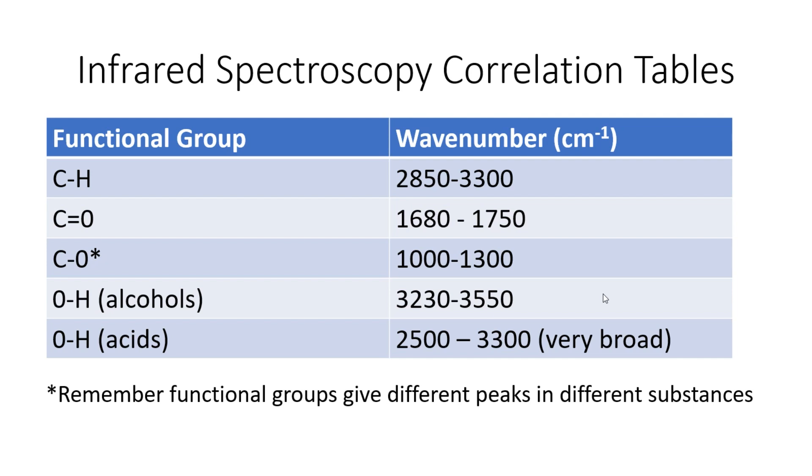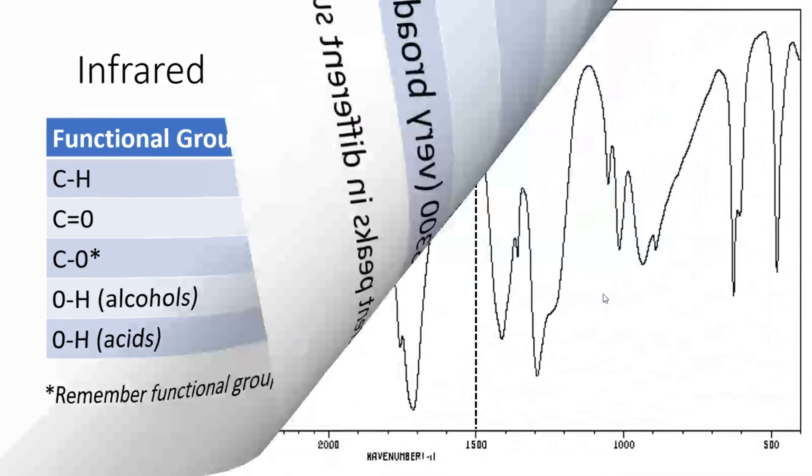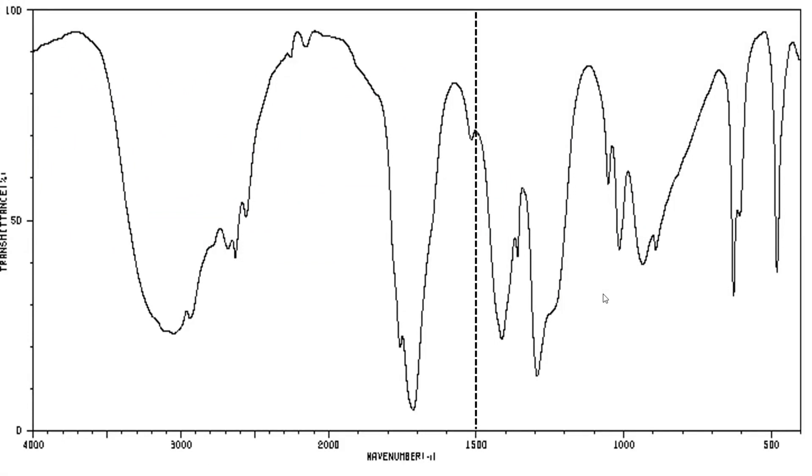Things will make a lot more sense when we look at some worked examples. As we go through the worked examples, I'm going to keep this table up and present, so we'll constantly be referring back to this table. Let's start by looking at our first worked example, which is going to be the one that we've been looking at previously in the background. We're going to actually work out what this spectrum is telling you.